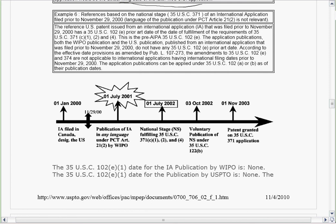Dan Bell, Bell Certified. As we continue to speak about the MPEP at 706.02F1, we're speaking about 35 U.S.C. 102(e)(1) and the nine examples found at this section of the MPEP. Let's take a look and see what this example has in store for us. Notice you have an international application that's filed — this is the first one we've seen that's filed before the critical date. So this is going to be an old 102E example.